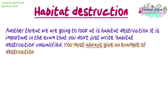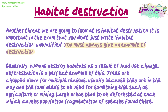Another threat is habitat destruction. It is important in the exam that you don't just write 'habitat destruction' unqualified — you must always give an example. Generally, humans destroy habitats as a result of land use change. Deforestation is a perfect example of this: trees are chopped down for multiple reasons, usually because the land needs to be used for something else such as agriculture or mining. Large areas tend to be deforested at once, which causes population fragmentation of species found there.